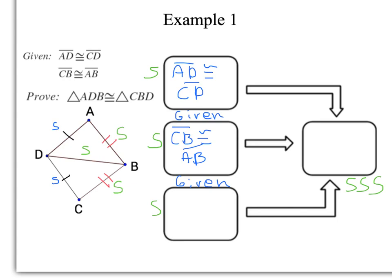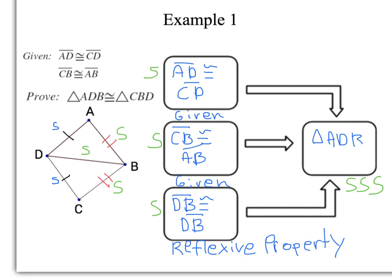And lastly, I have to put DB congruent to DB in there, by the reflexive property. Again, that just means, basically, if you flip the triangle on top of itself, they would be congruent in both triangles. Any time you see something that they share, you'll use the reflexive property. So now I've got everything I need, and I can put in my triangle congruence statement in the last section.